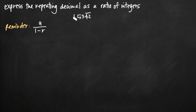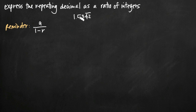Today we're going to be talking about how to express a repeating decimal as a ratio of integers. In this particular problem, we've been given the repeating decimal 1.5342 and we've been told that the 42 is repeating. That's what the bar over 42 means — the 42 repeats. So if we continue writing out this decimal, what we get is 42, 42, 42, forever.